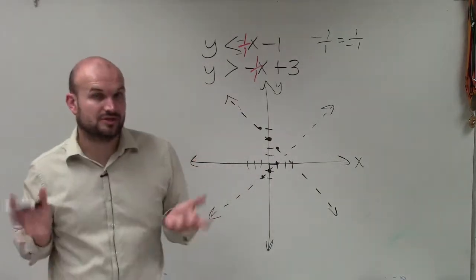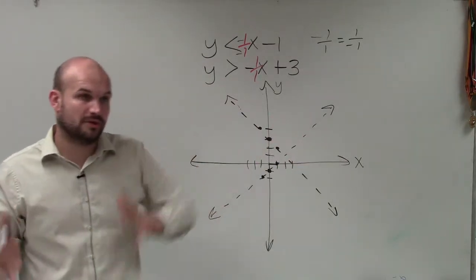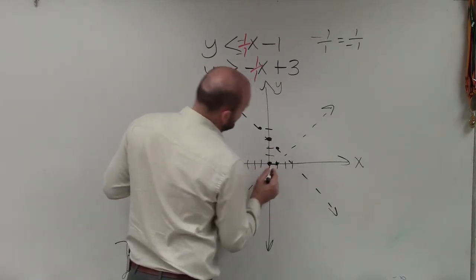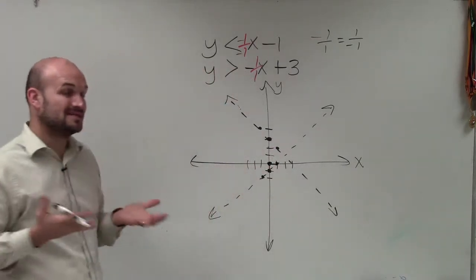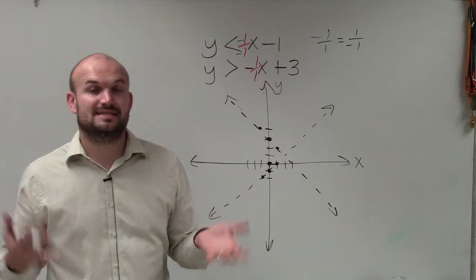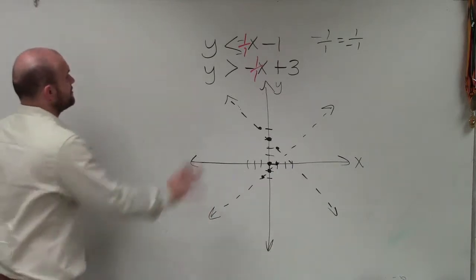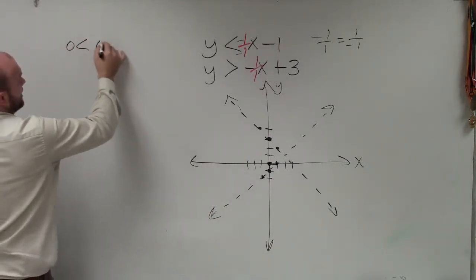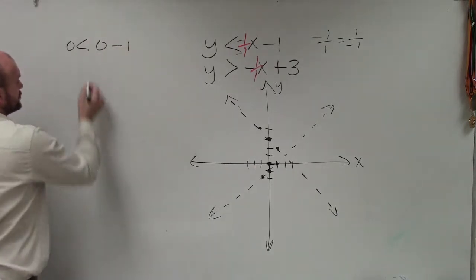Now, the last step we need to do is determine our shading. Are we going to be shading above or below each boundary line? So to do that, we want to pick a test point that does not lie in either of the lines. And the best test point to pick when it doesn't lie in the lines is 0, 0. So now I'm just going to plug in 0 in for x and for y for both of my inequalities and determine if it's true or false.